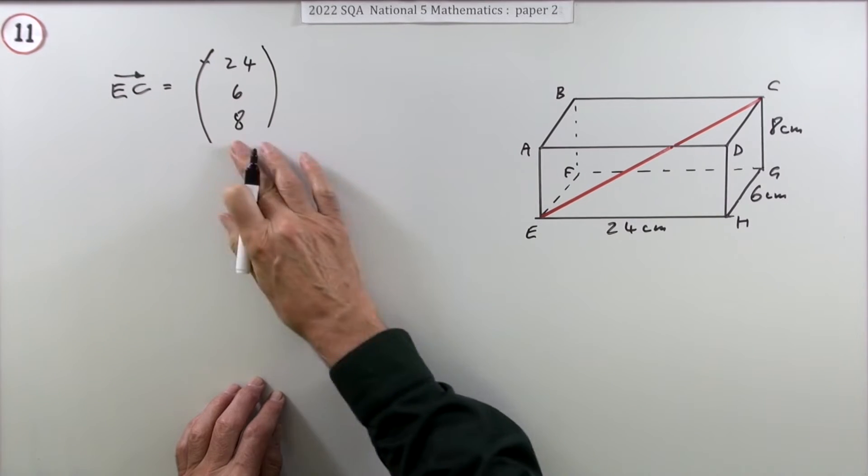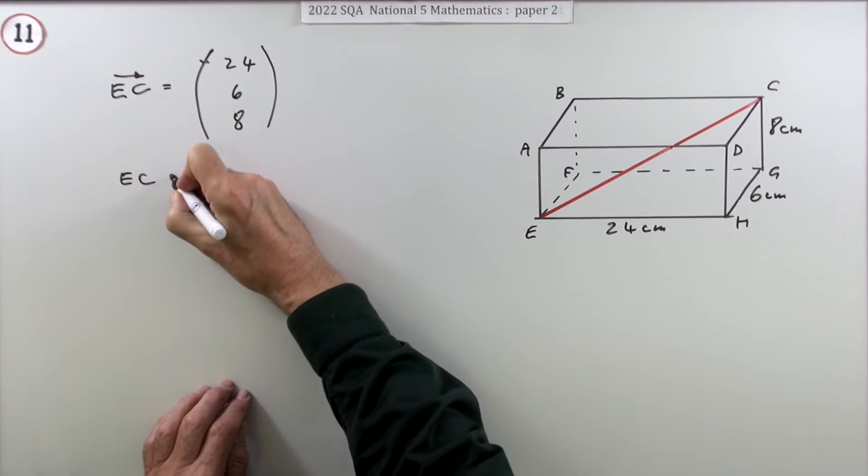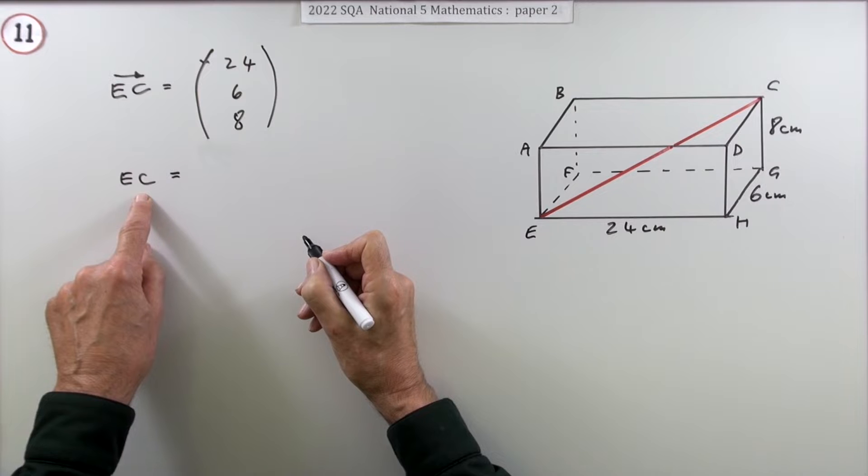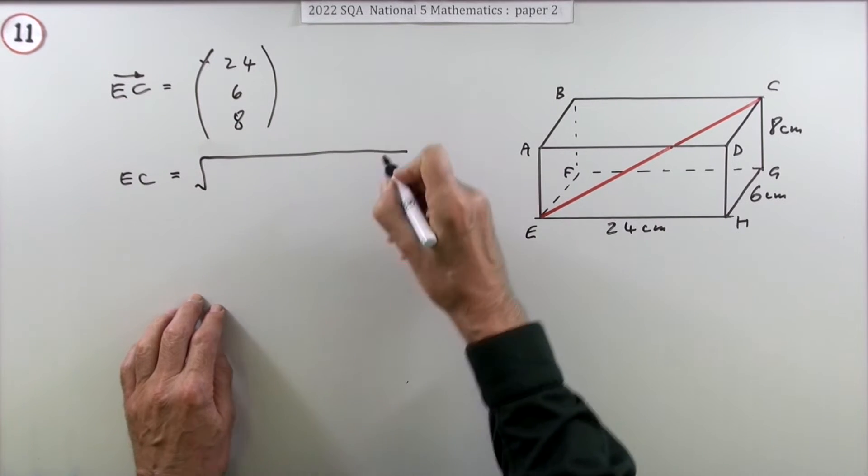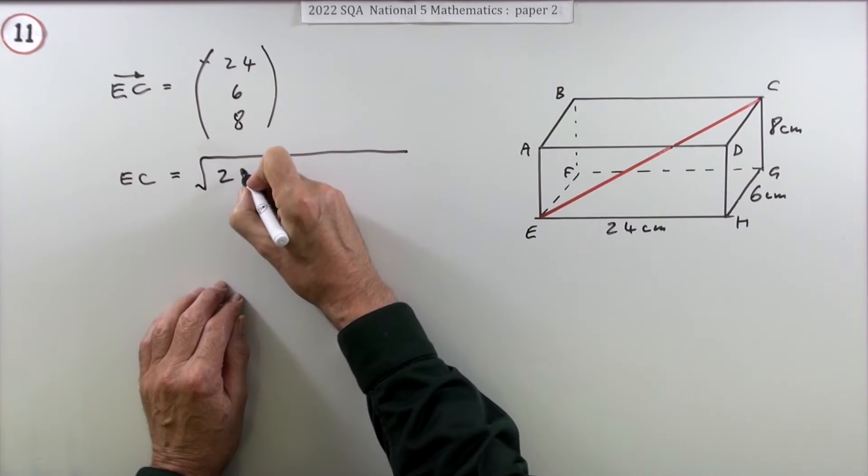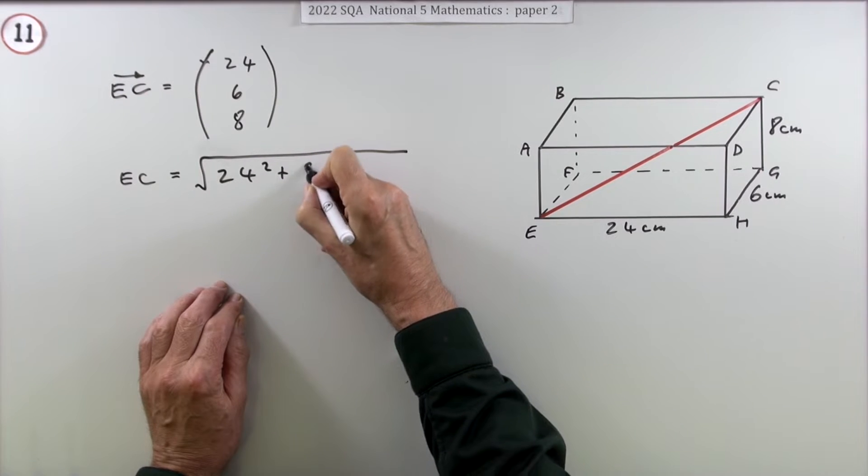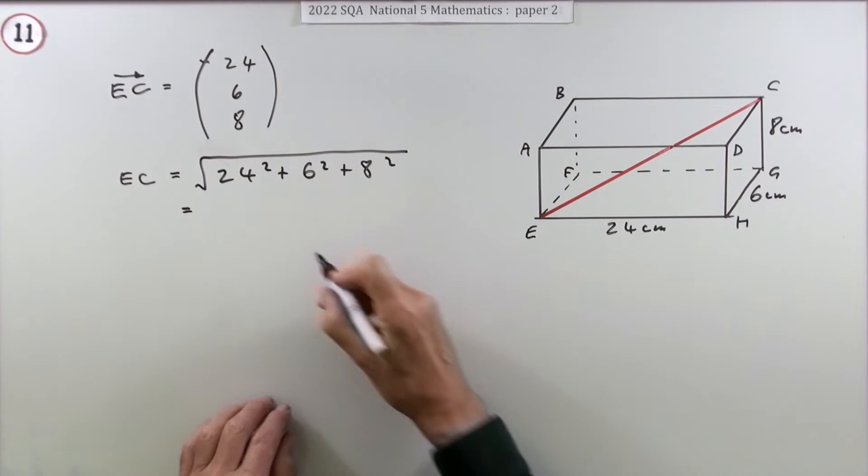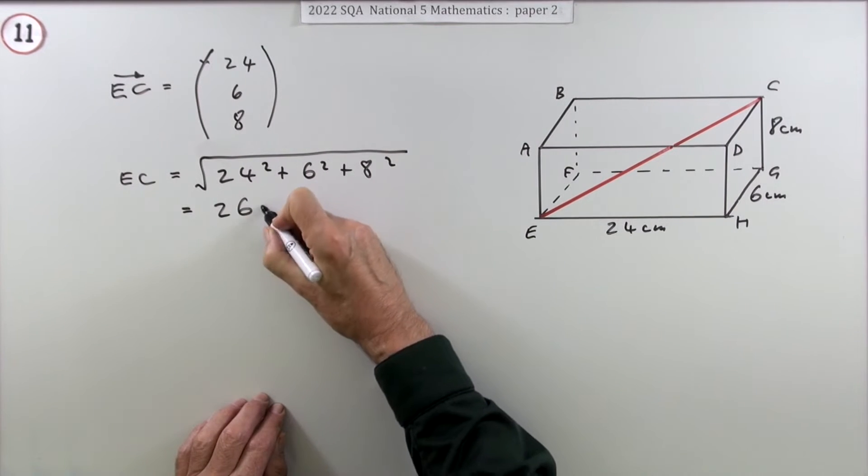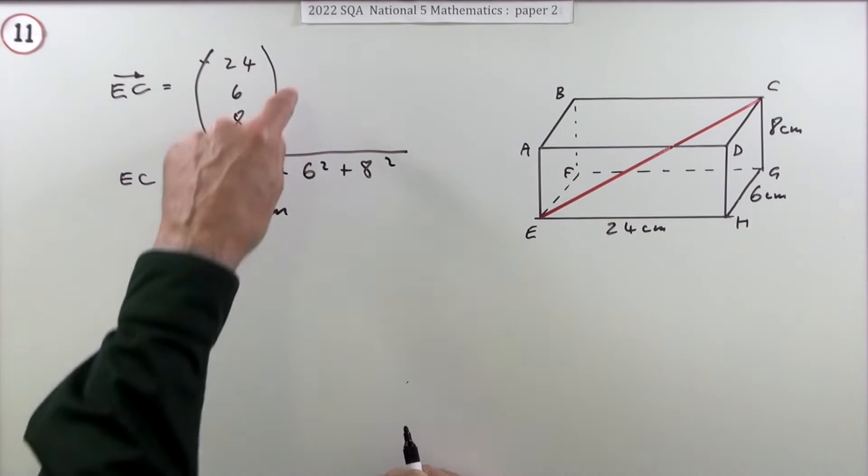Then you could have gone on to say that the length of the line EC, in other words the magnitude of that vector, would be the square root of 24 squared plus 6 squared plus 8 squared. Then press the buttons and go 26, and put the units in centimeters. Those would have been the three marks.